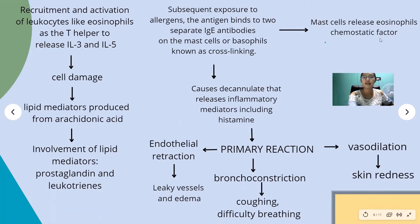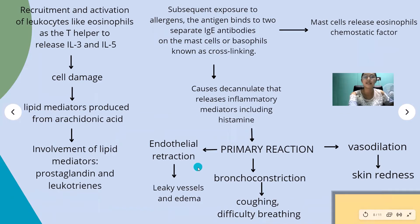This cross-linking triggers the release of eosinophil chemotactic factor, which recruits eosinophils to the inflammatory site. Subsequent exposure also causes degranulation, releasing inflammatory mediators including histamine. Histamine can cause endothelial retraction leading to leaky vessels and edema, bronchoconstriction causing coughing and difficulty breathing, and vasodilation that can cause skin redness.